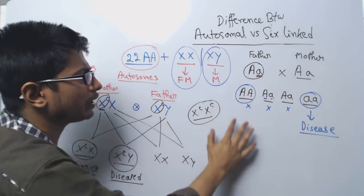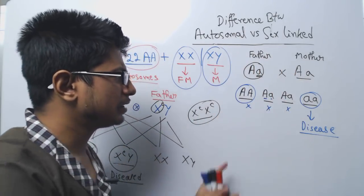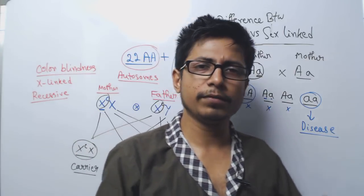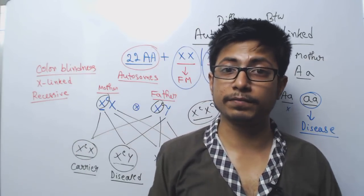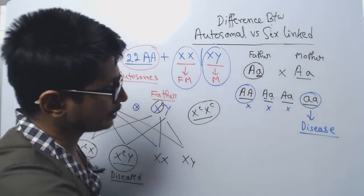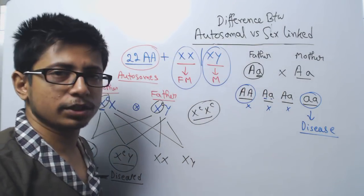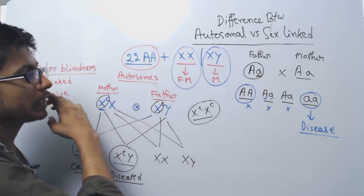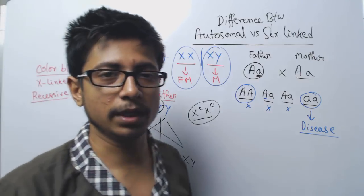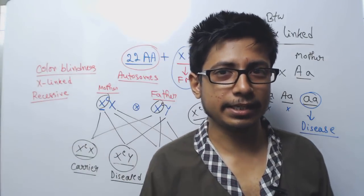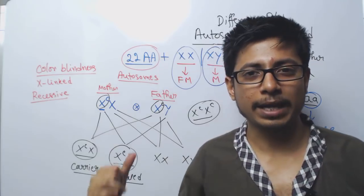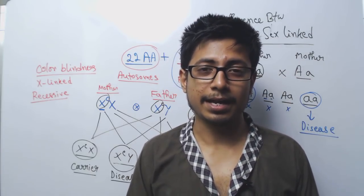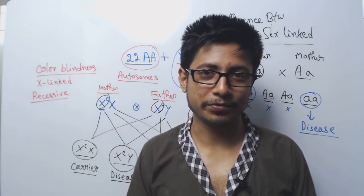On the other hand, for the autosomal type, transmission is not sex-biased — in a population about 50 percent of males and 50 percent of females can be affected, and it transfers from one generation to another without any gender-specific pattern. That, in essence, is the difference between autosomal inheritance and sex-linked inheritance. If you like this video, please hit the like button, subscribe to my channel, and share this video with your friends. Thank you.